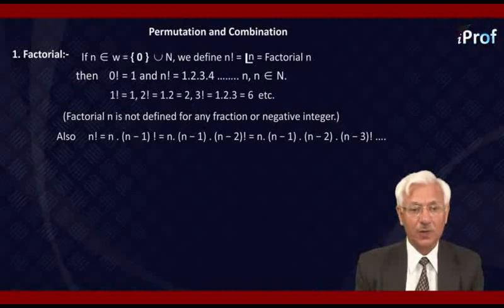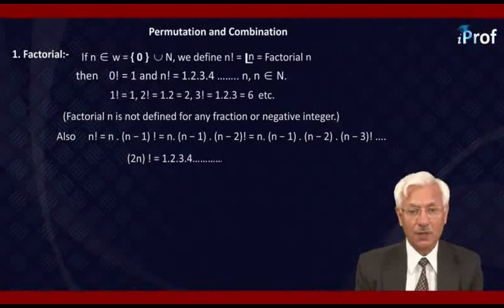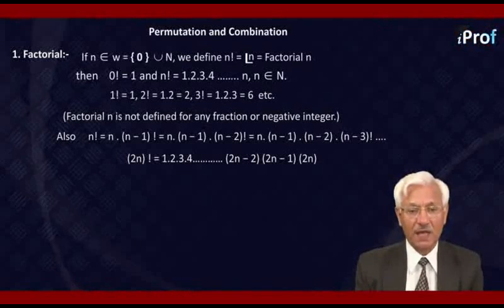Let us study 2n factorial. 2n factorial means 1, 2, 3, 4, and so on, their product up to 2n-2, 2n-1, and 2n. If I pull out even and odd integers separately, we get the first factor as 2, 4, 6, up to 2n-2 and 2n.